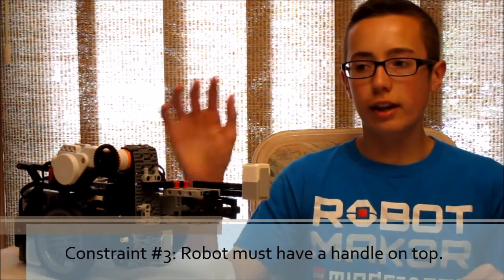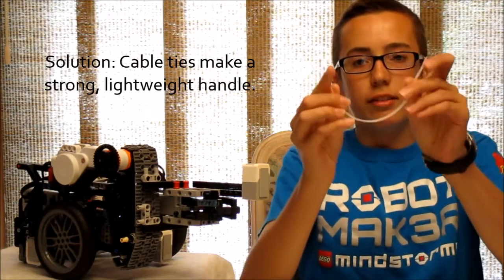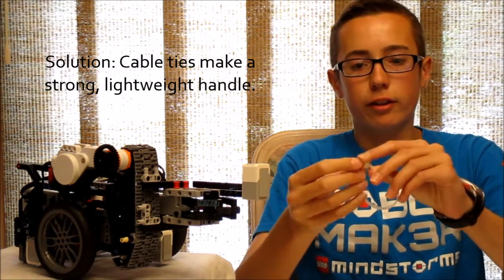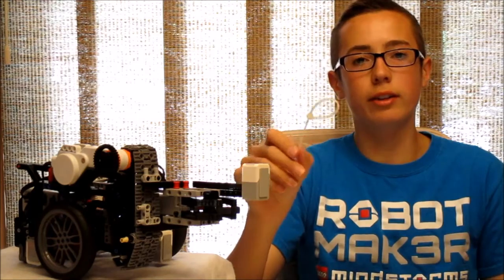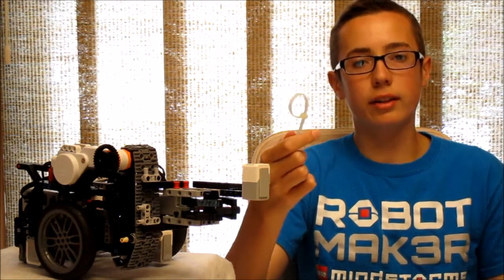Constraint number three is that your WRO soccer robot must have some sort of handle on top where your referee can easily reach and grab and pick up your robot. And this is the one exception to the first rule because the handle is not actually included in your robot's total height. Also, if you're in the novice league, they do allow you to use non-LEGO parts as your handle, such as these wire ties, which are fun. And actually, in the Gen 2 rulebook, they even recommend that you use wire ties because they're very lightweight and strong and not necessarily intrusive to your robot design.